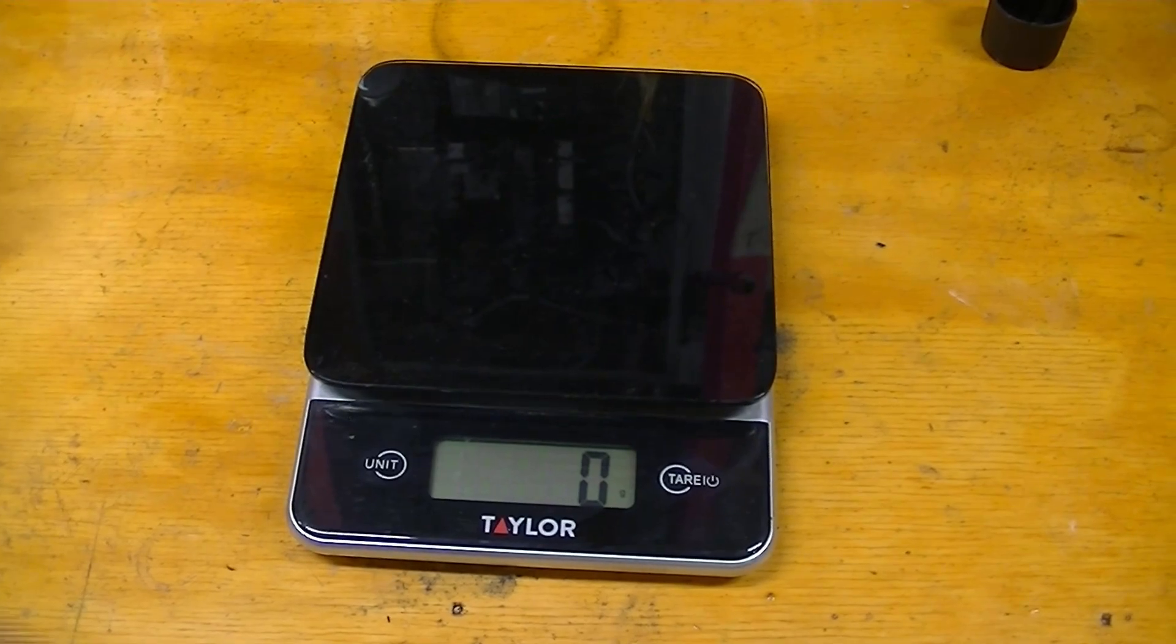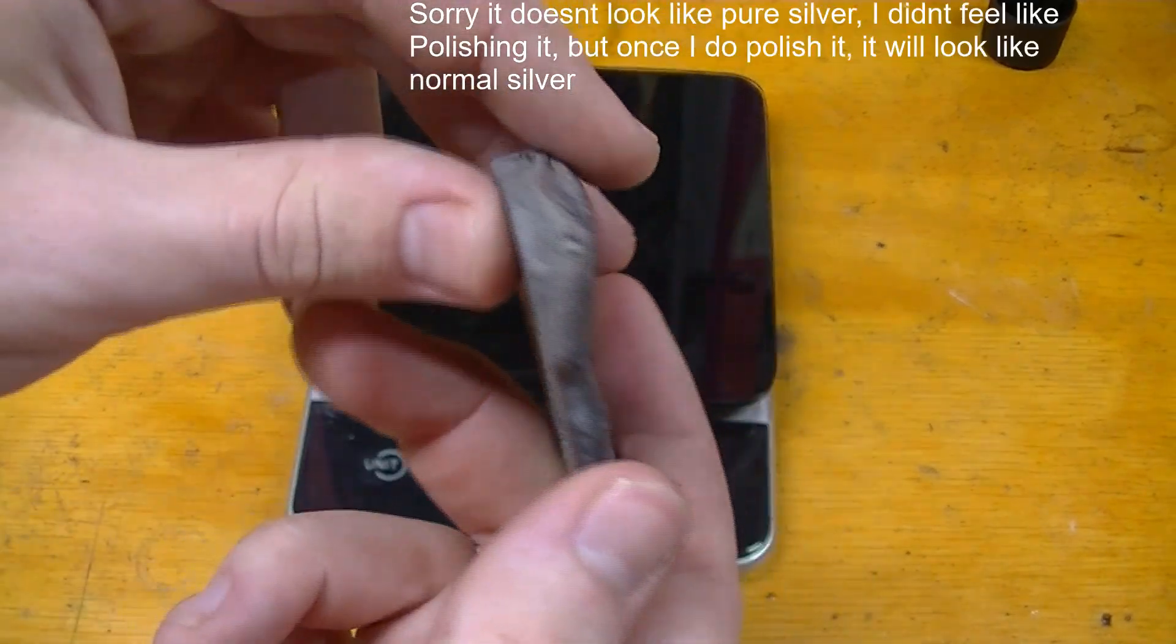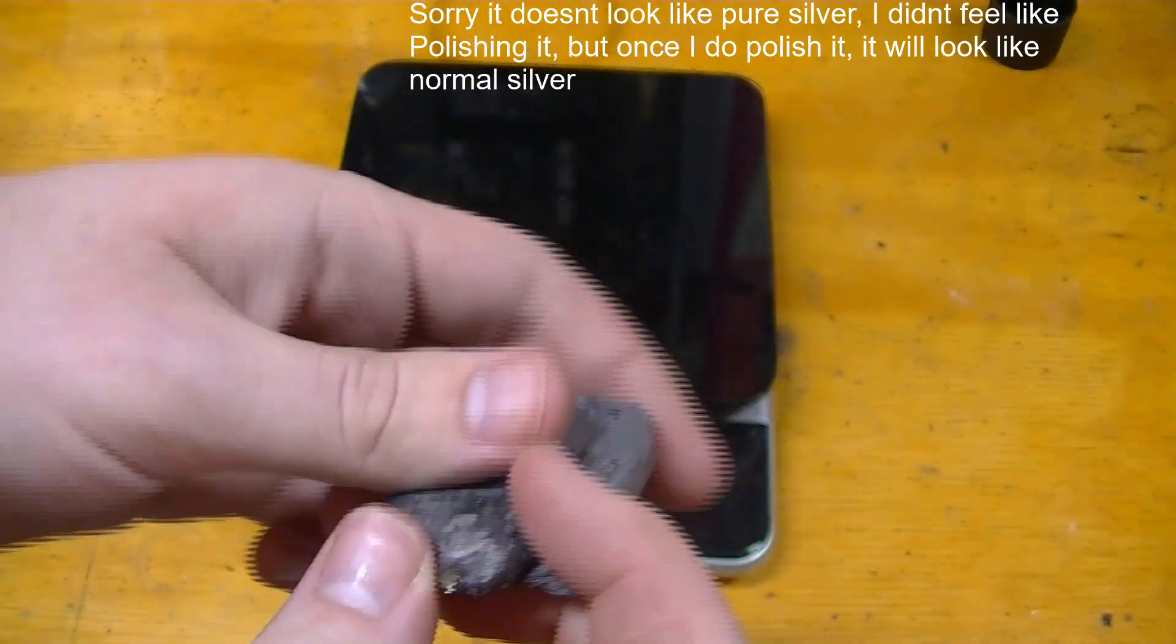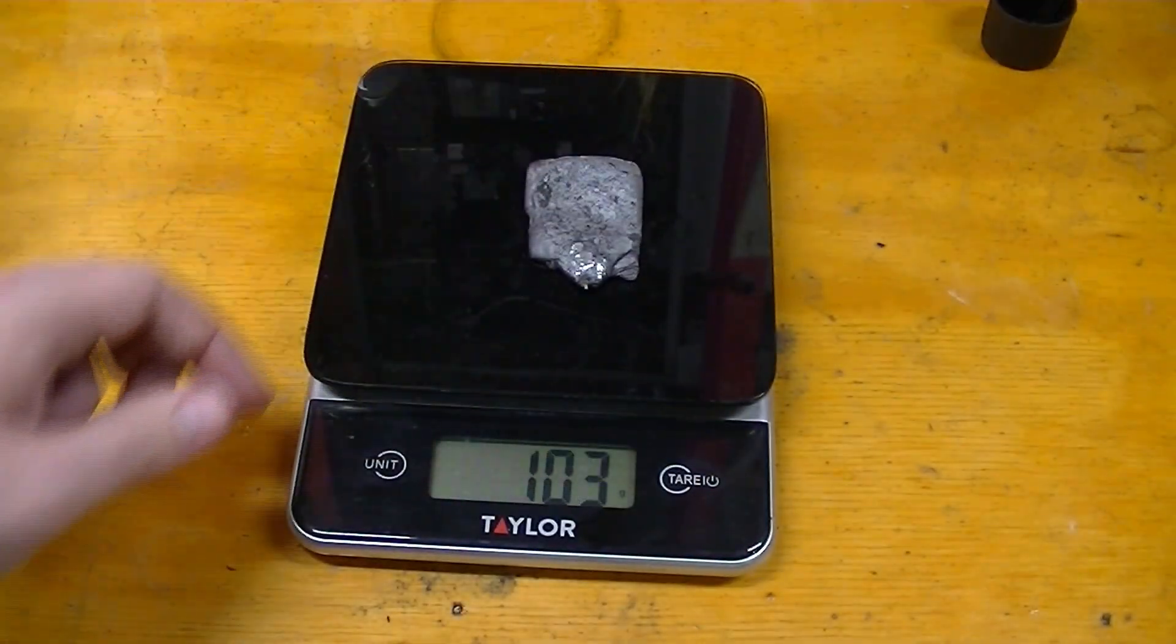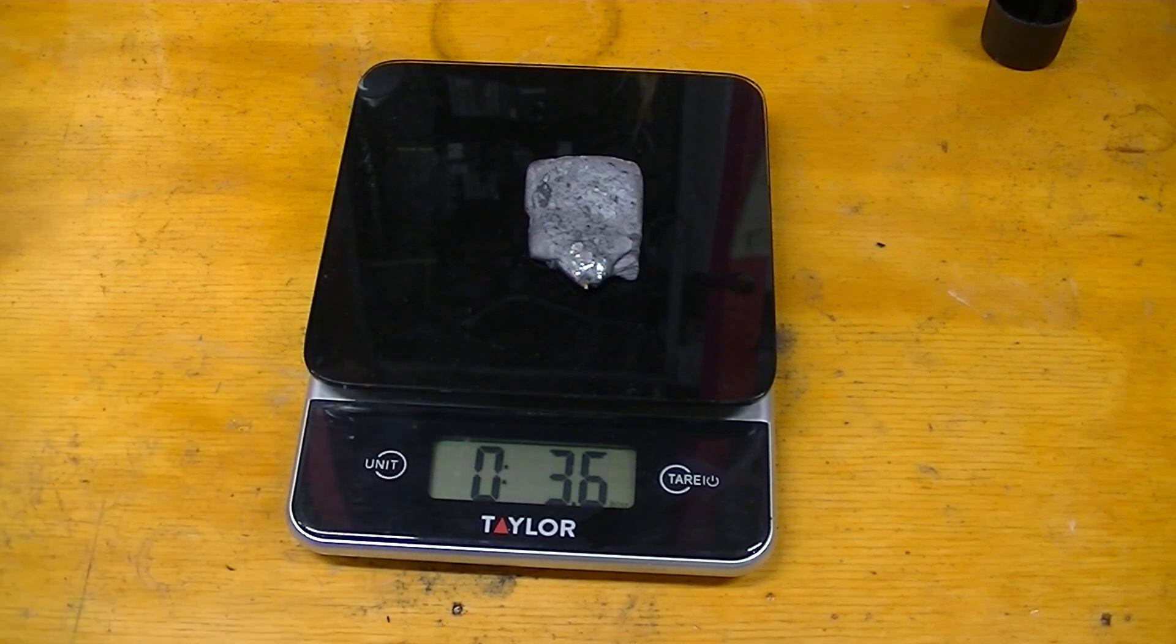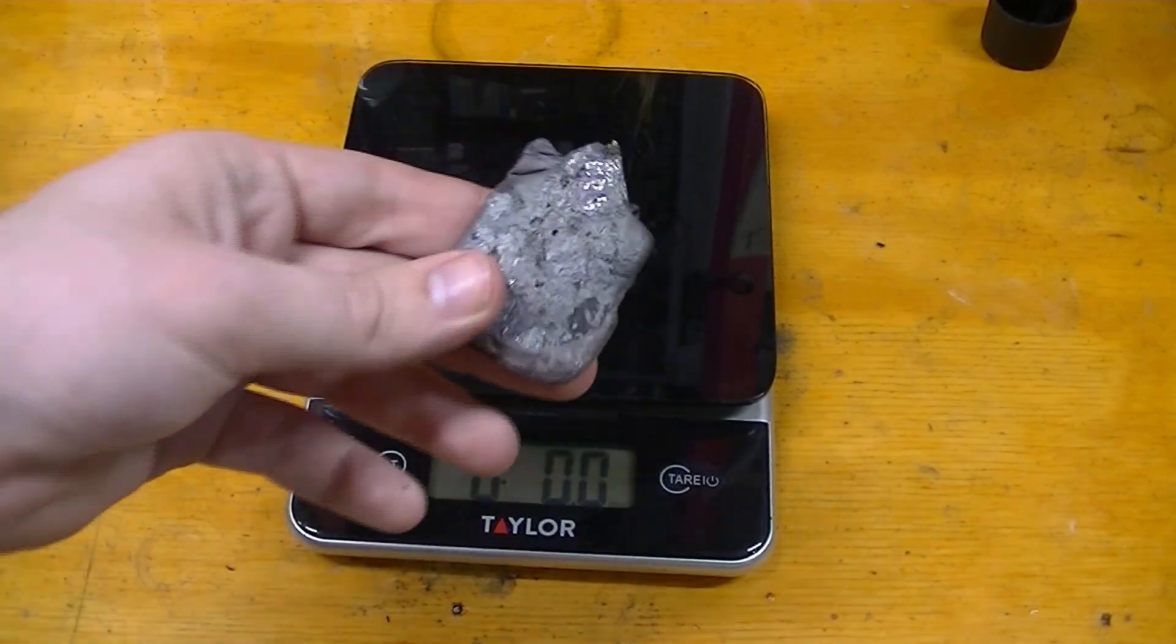All right guys, you just saw the work we did. This was the product of that. Pure silver weighs 103 grams or 3.6 ounces. And last I checked, silver right now is about $17 an ounce, plus a little bit more if you have the actual silver.